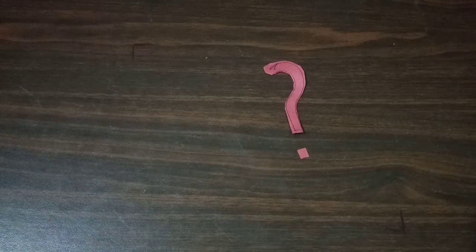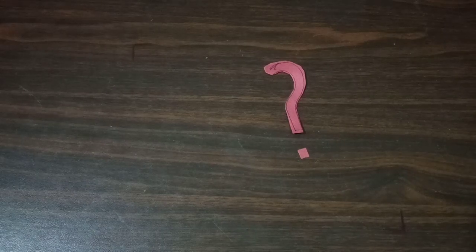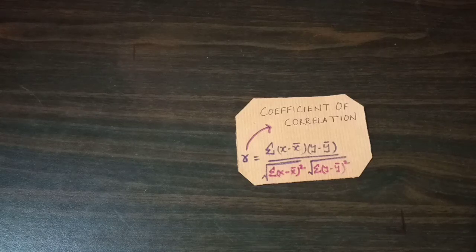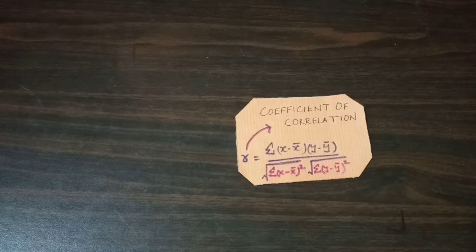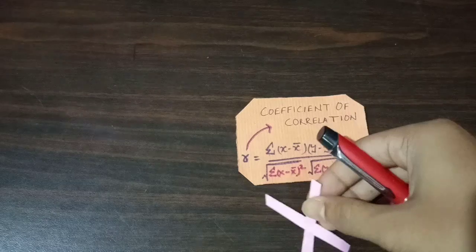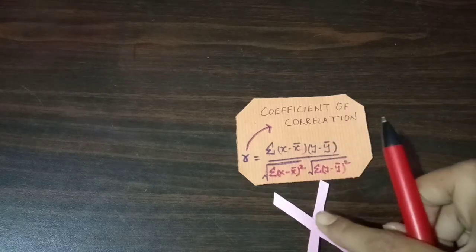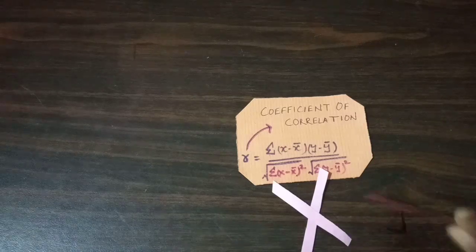We can find the value of the coefficient of correlation R with the help of this formula: R equals the summation of (X minus X mean) multiplied by (Y minus Y mean), divided by the square root of the summation of (X minus X mean) squared, multiplied by the square root of the summation of (Y minus Y mean) squared. Here X and Y are the two variables.